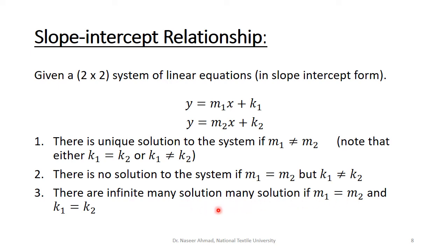The third possibility is that the slope is equal and the intercepts are also equal. This means that for a two-by-two system, line 1 and line 2 have the same slope and same y-intercepts. They will overlap — every point coincides — so this system of equations has infinite solutions.